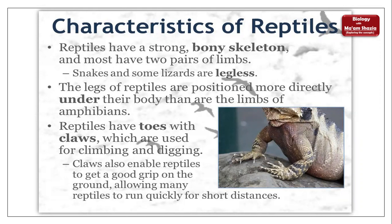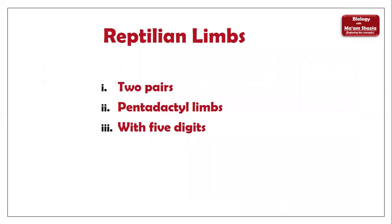They have developed two vertebrae — the atlas and axis — which has made head and neck movement free. Reptiles have freedom of head movement. Snakes and some lizards are legless, but most reptiles have limbs positioned directly below their body so the upper body can lift off the ground. They have toes and claws for climbing, digging, and gripping, and they are also fast runners. Reptilian limbs are two pairs — forelimbs and hind limbs — and they are pentadactyl, with four or five digits.